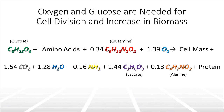Here we show the cell growth and protein production reaction. Oxygen and glucose are also necessary for biomass expansion and protein production. Since oxygen is the rate-limiting reagent in terms of solubility, it is important to optimize the delivery of oxygen to the cells.